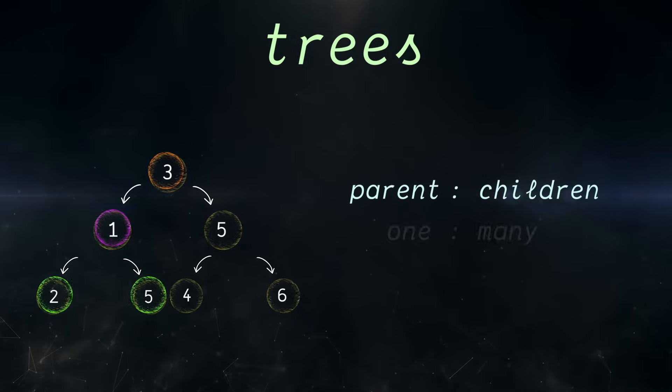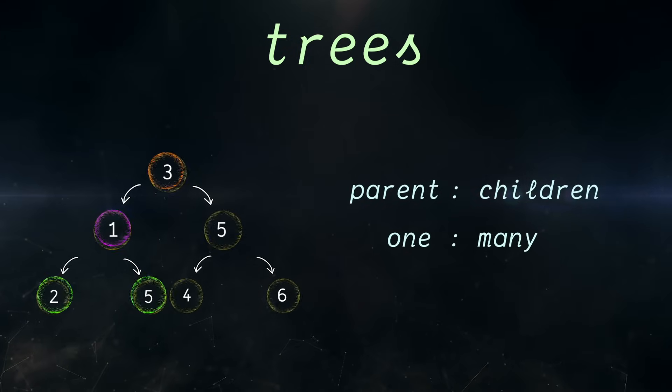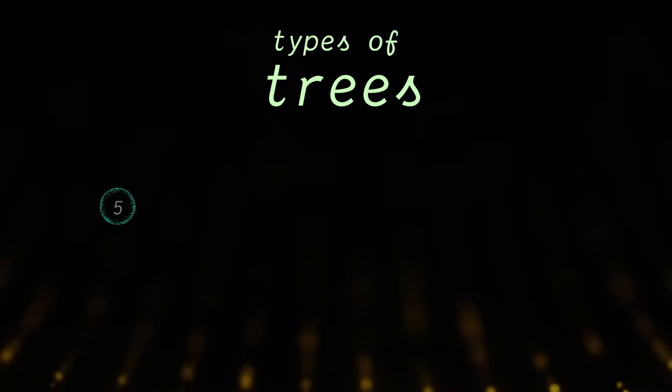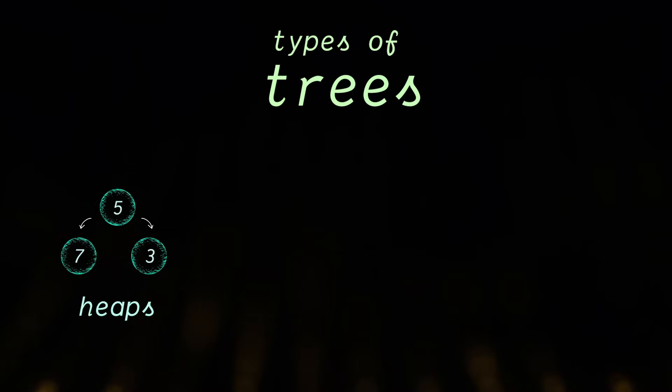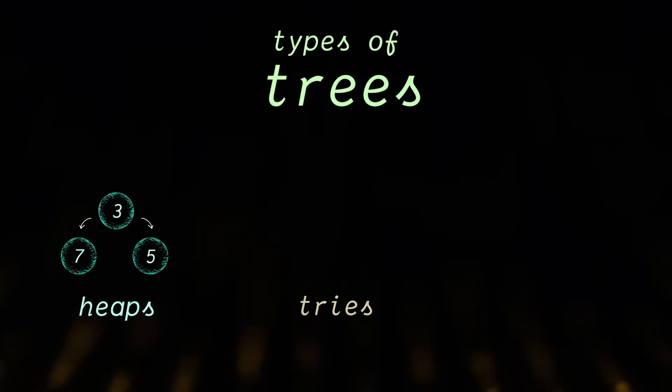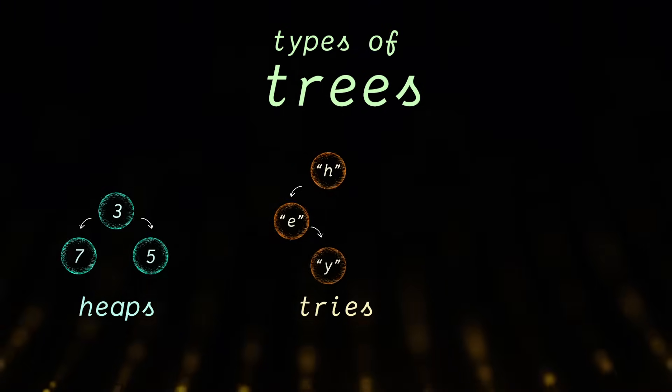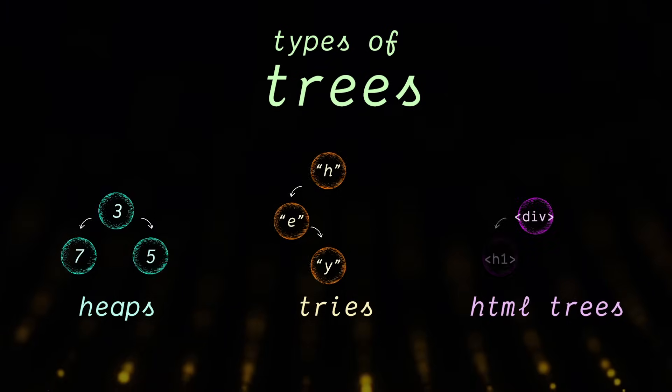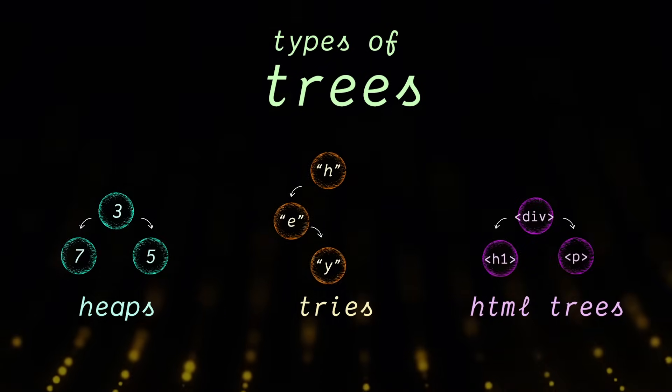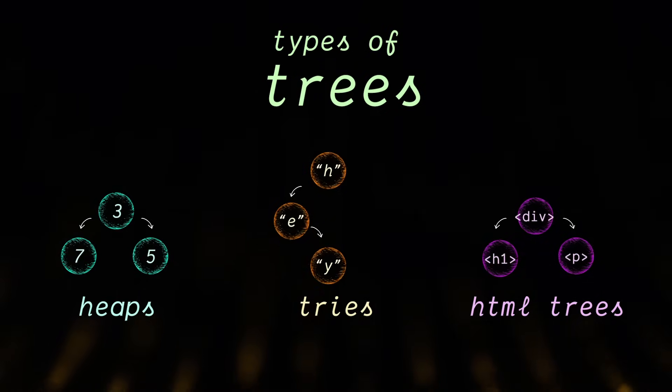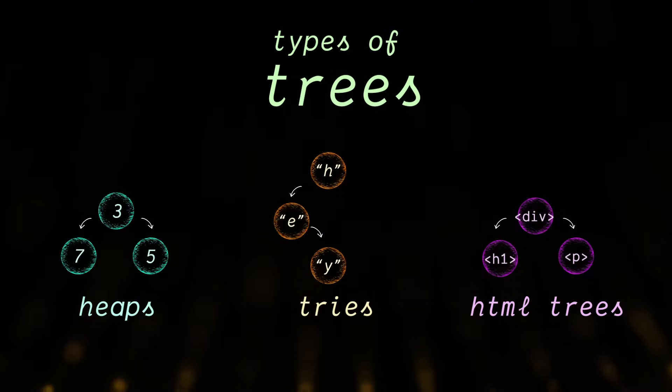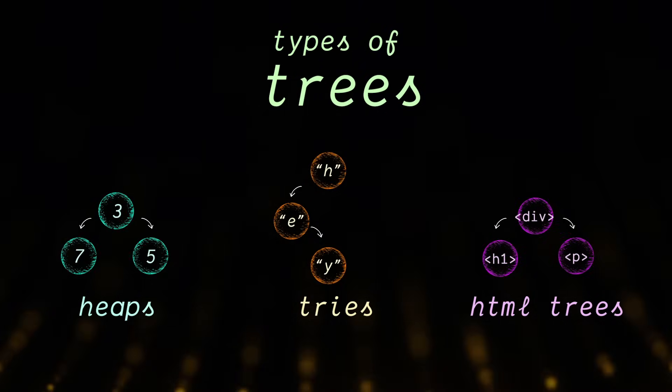So just think, parent to children, one to many. Even within trees, there's so many different types. You've got heaps, which keep things in order as you add to them. You've got tries, which you can store words in to look them up easily. And the HTML on any page can be represented as a tree. In fact, you can store anything in a tree with a hierarchical nature, that is parents and children.